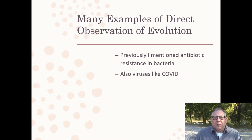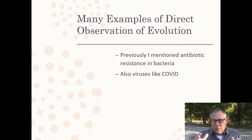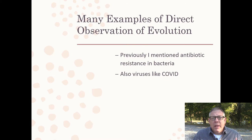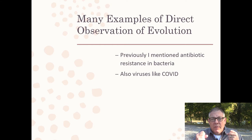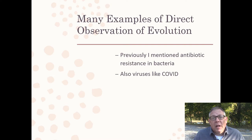We've already talked about some of these — the evolution of antibiotic resistance in bacteria is a direct observation of evolution. The same thing with viruses like the COVID virus. Now that we can look at the DNA, we can see in detail how these viruses evolve and change over time. So if you say evolution happened in the past and no one has observed it — that's not true. We do observe it.